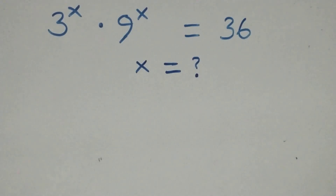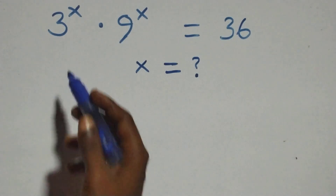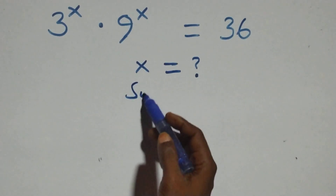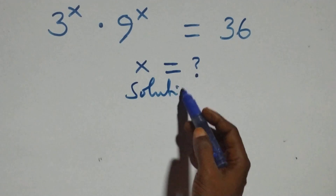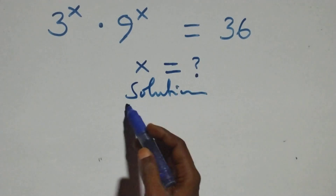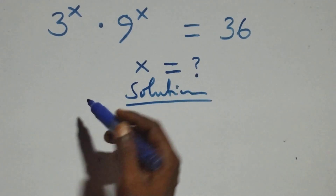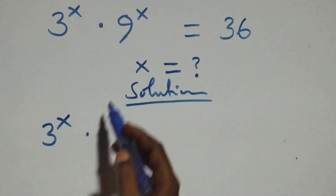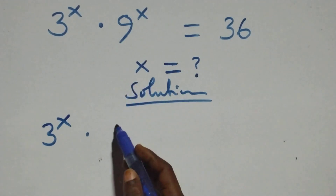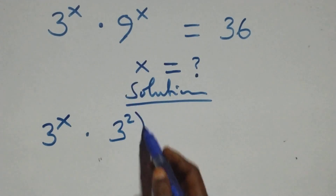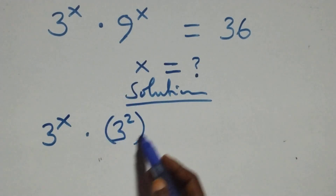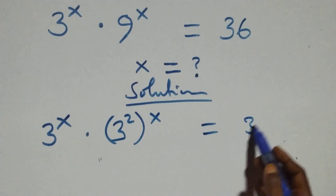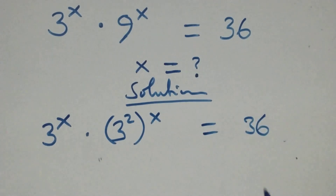Hello, you're welcome. We're going to solve this nice exponential equation. From what we have here, we can write this as 3 raised to power x times 9 — that's 3 squared — which is raised to power x, equals 36.